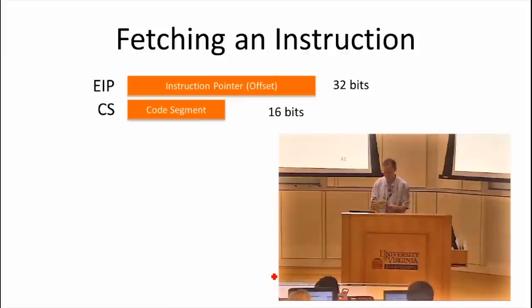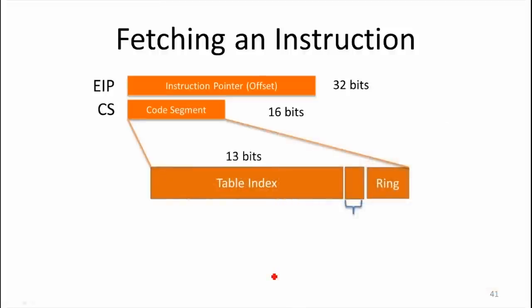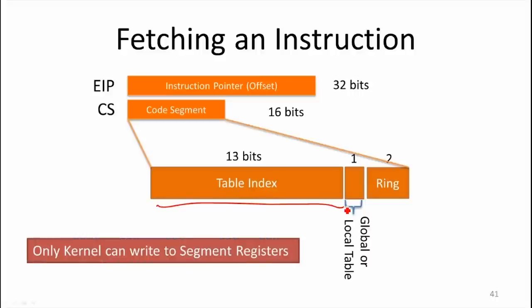We're going to select the segment, and then we've got a logical address that has the segment and the offset. If we fetch an instruction, so we've got an instruction pointer that gives us the location we want. The instructions are coming from the code segment, so there's a register that points to the code segment. What's in that register? We have the table index. We have one bit that tells us if it's in the global or the local table, and then we have two bits that give us the ring we're running. We have four levels of rings in the x86. So we have 13 bits left to index into that table. The segment registers, so this is one of several segment registers, those are protected.